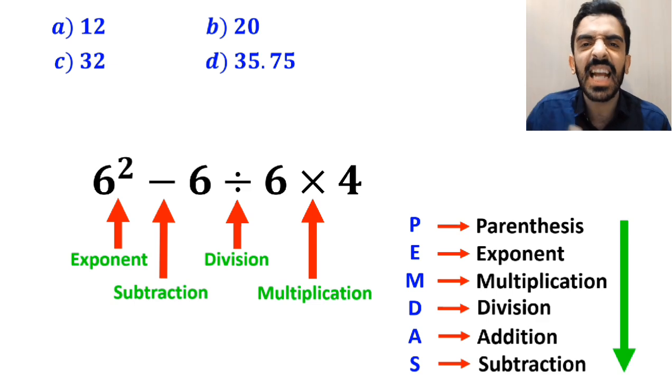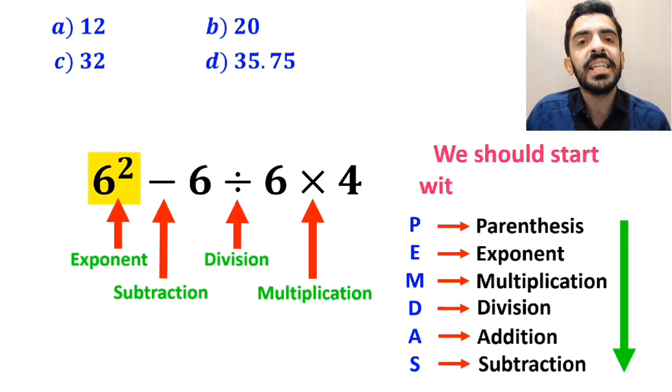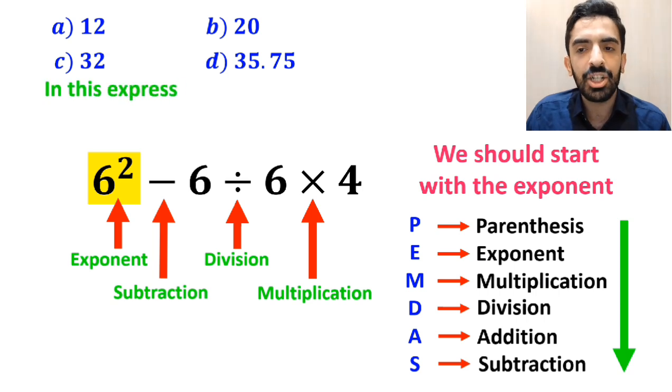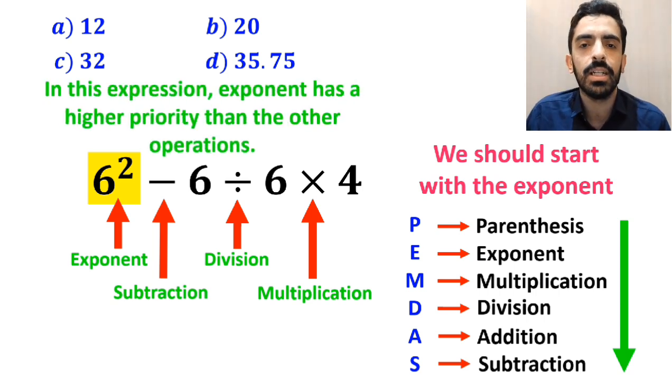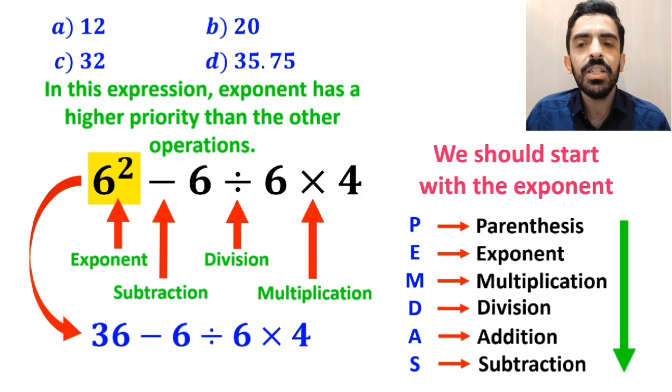We should start with the exponent because in this expression, exponent has a higher priority than the other operations. So this expression simplifies to 36 minus 6 divided by 6 times 4.